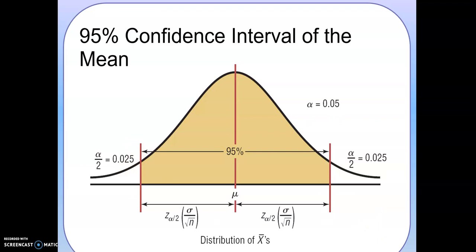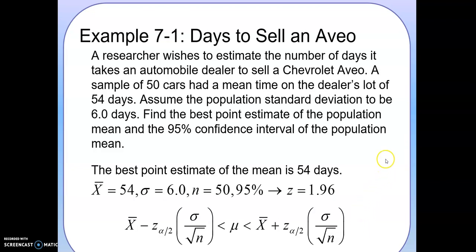Let's look at the example. Example one: days to sell an Aveo. A researcher's wish to estimate the number of days it takes an automobile dealer to sell a Chevrolet Aveo. A sample of 50 cars had a mean time on a dealer's lot of 54 days. So if we sample 50 cars, the average number of days sitting on a lot is 54 days.